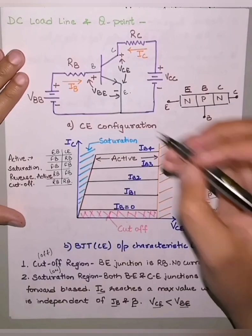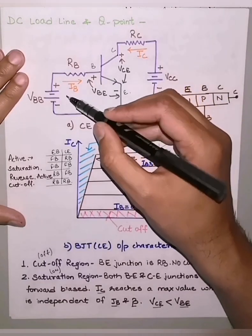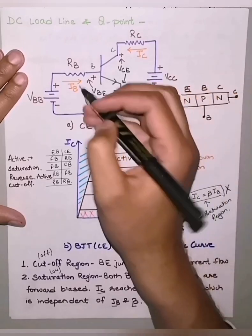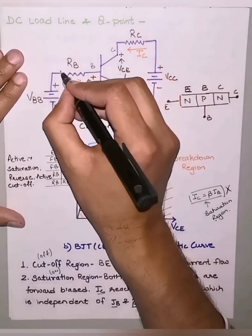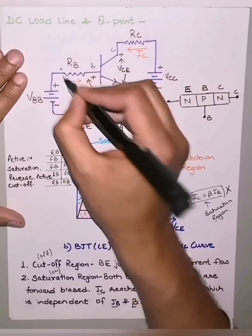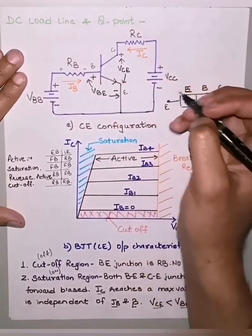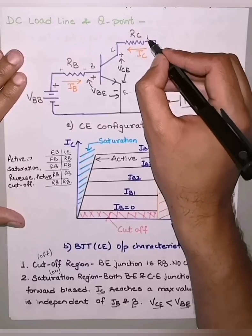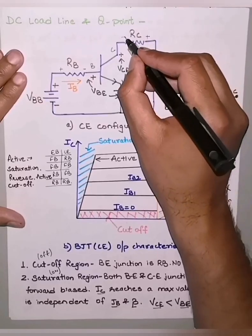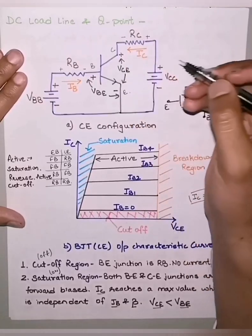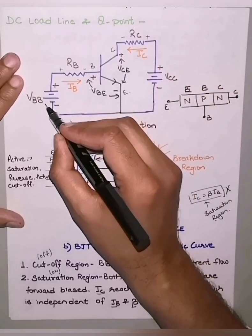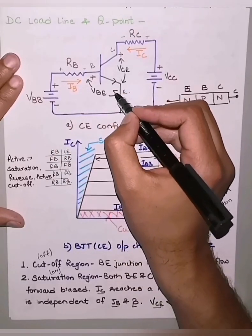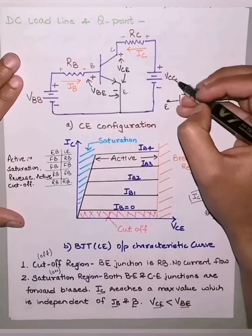To obtain the DC load line, we apply KVL at the input and output. At the input terminal, VBB is the voltage and the current enters at the positive terminal. At the output section, the current enters at the positive terminal as well. The KVL equation at the input is: VBB − IB·RB − VBE = 0.